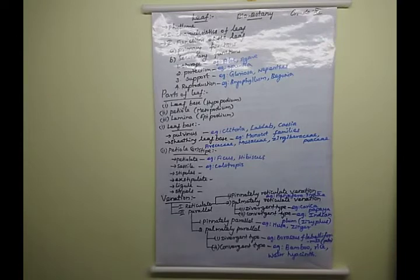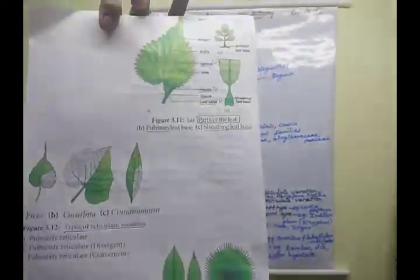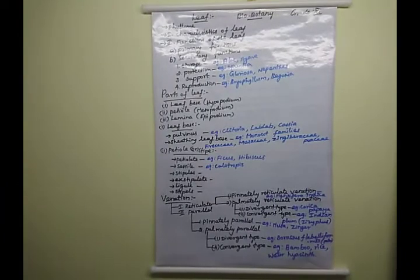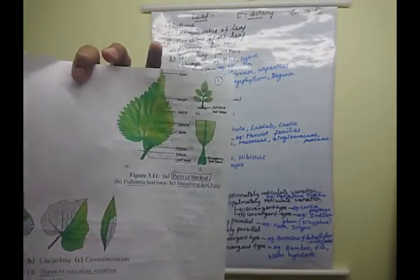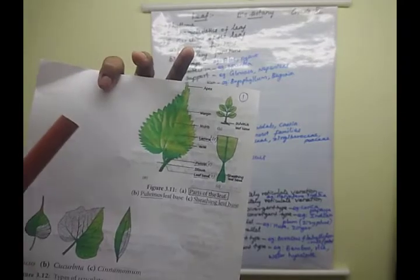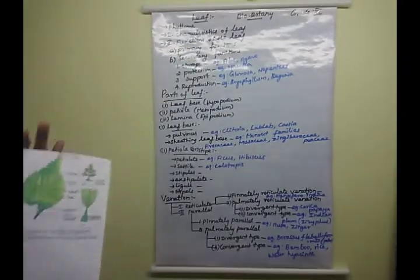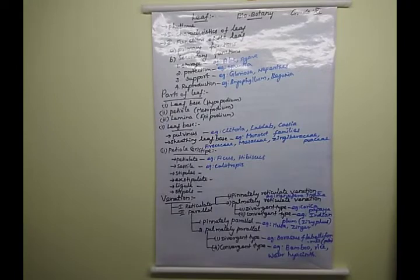If you take one leaf, it is mainly present in three parts: leaf base, petiole, and leaf lamina. These are the three regions present in a leaf. The leaf lamina is traversed by veins, and these veins contain vascular tissues.